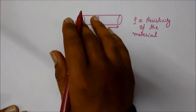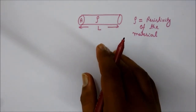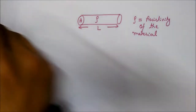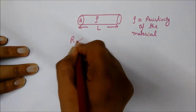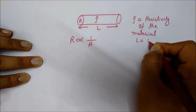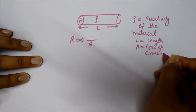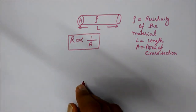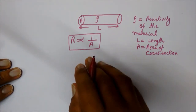As the area of cross-section A of the wire increases, it becomes easier for the charge carriers or electrons to move through it, resulting in low resistance to the flow of charge carriers. So we can say that resistance R is inversely proportional to the area of cross-section A.